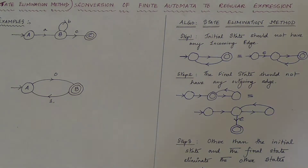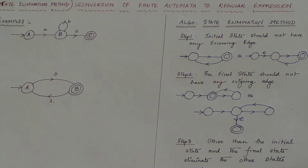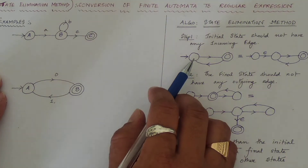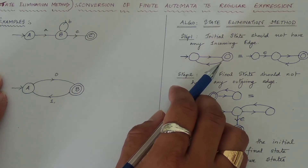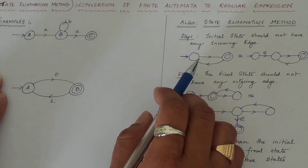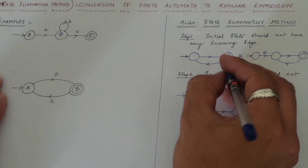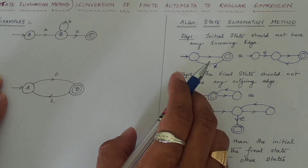In the initial setup, you need to follow three steps. In the first step, you have to check that the initial state should not have any incoming edges. As I have taken an example, you can check that this initial state — the initial state should not have any incoming edges. You can see here there is an incoming edge coming, so this is not accepted while converting a finite automata to a regular expression.